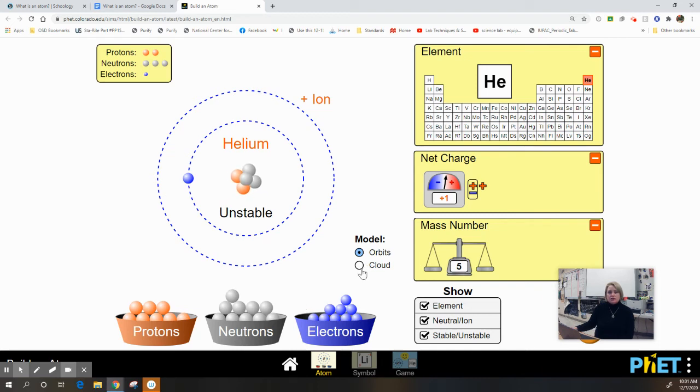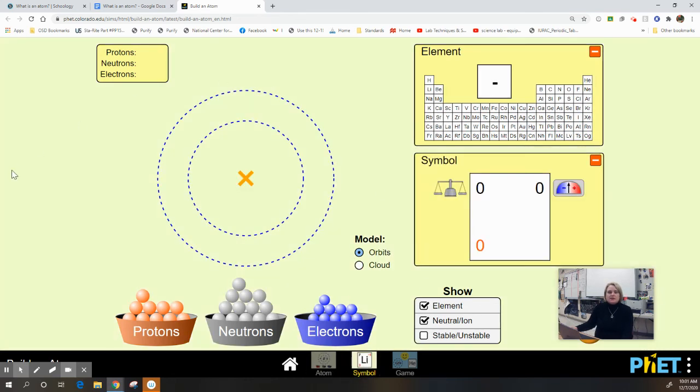I can also choose here to use the cloud model as opposed to the orbit model. There's no real reason to switch in between these for this particular task. And if I go to this second simulation here, same exact thing to build the protons and the neutrons, to build the atom out of protons and neutrons.